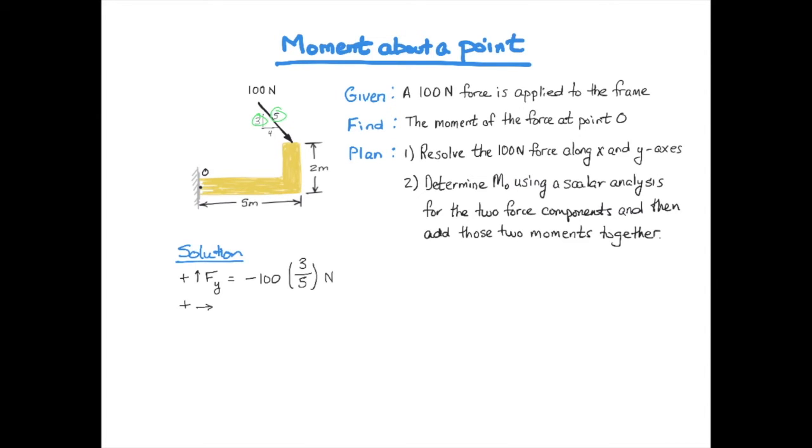And then we define the f component of that 100N force. Since we define by convention a positive value moving to the right, the 100N moves to the right, or imparts a force to the right, so it's a positive force, and it's four-fifths the total force scalar for the x component.